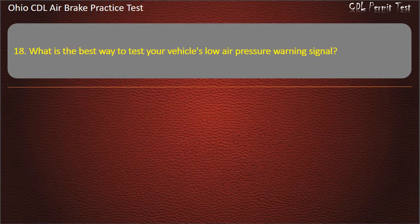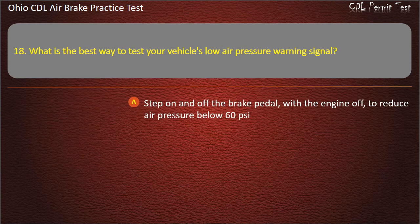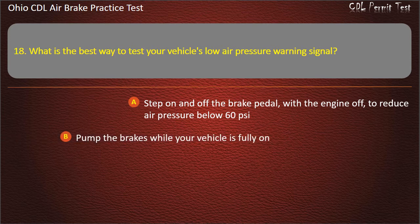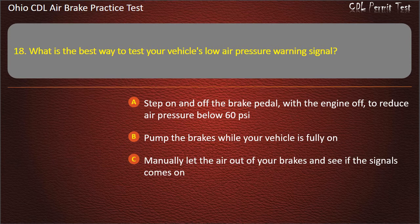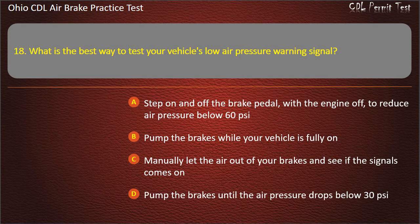Question 18: What is the best way to test your vehicle's low air pressure warning signal? Step on and off the brake pedal, with the engine off, to reduce air pressure below 60 pounds per square inch. Pump the brakes while your vehicle is fully on. Manually let the air out of your brakes and see if the signal comes on. Pump the brakes until the air pressure drops below 30 pounds per square inch. Answer: Step on and off the brake pedal, with the engine off, to reduce air pressure below 60 pounds per square inch.